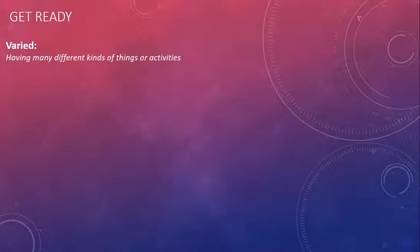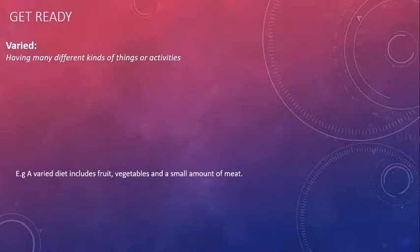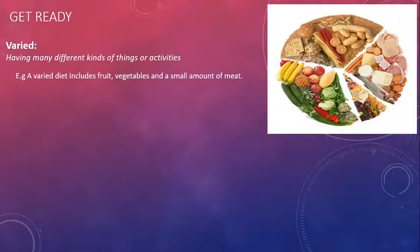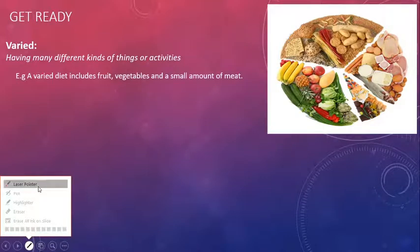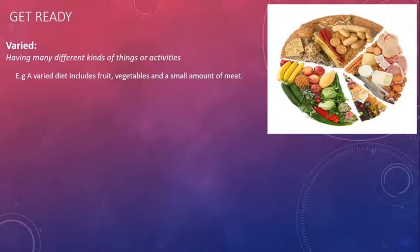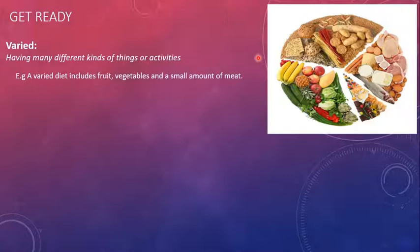We are here to sharpen our vocabulary words so please get ready. The very first word is 'varied.' Varied means diverse, mixed — having many different kinds of things or activities. For example, a varied diet includes fruit, vegetables, a small amount of meat, dairy products, protein, and starchy and wheat products. So a varied diet is a very diverse diet which has many varieties, not just one kind of thing. Something which has a variety is called varied.